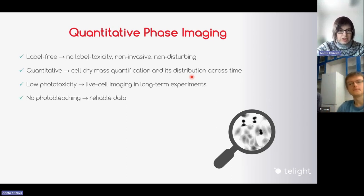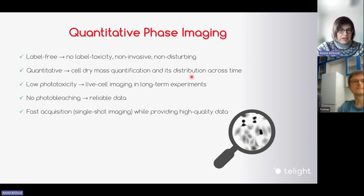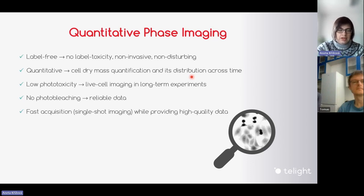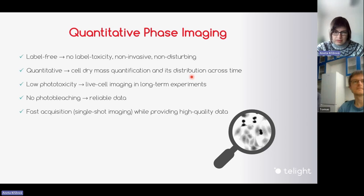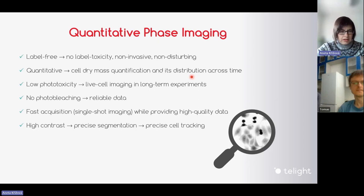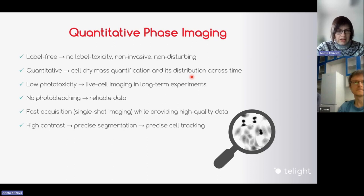There is also no photobleaching, so data are very reliable and the acquisition is fast because it can be a single-shot instrument providing data of high quality. The high contrast between cells or image objects and the background enables very precise segmentation and precise cell tracking.